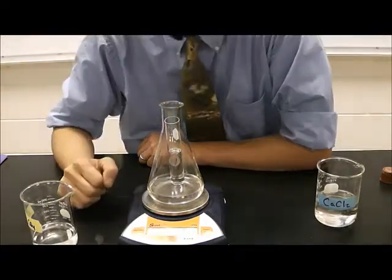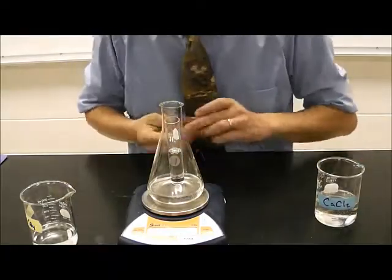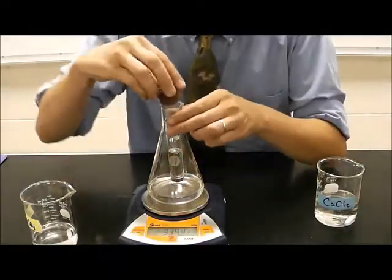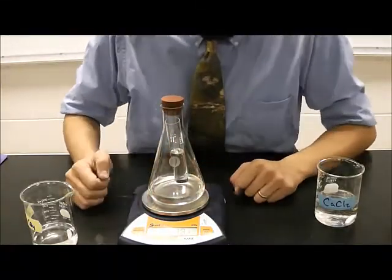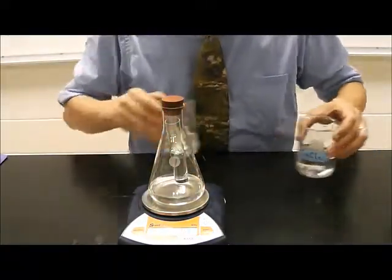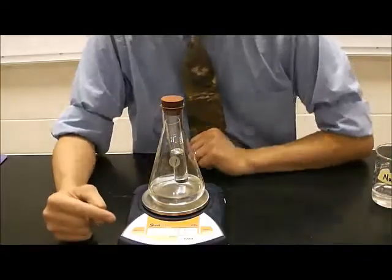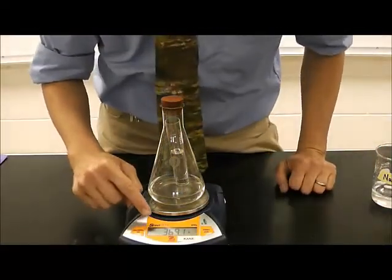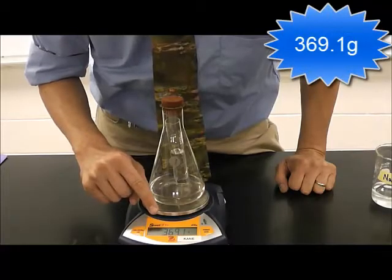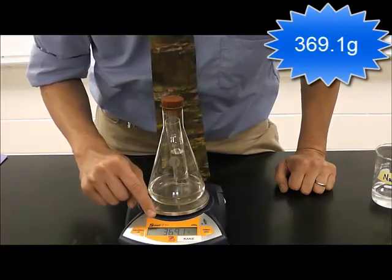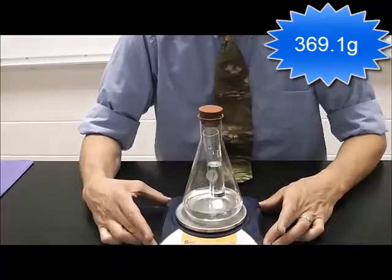Notice that the two chemicals are not mixing yet. I'm also going to use a stopper to stop up the top of the Erlenmeyer. And we are now going to note the current mass on the balance. You should be able to read that. It says 369.1 grams.